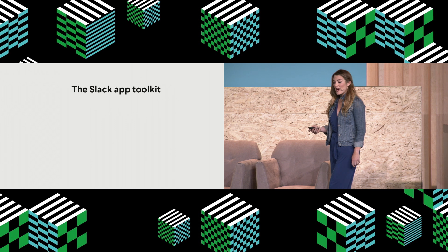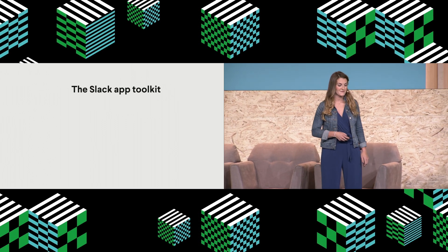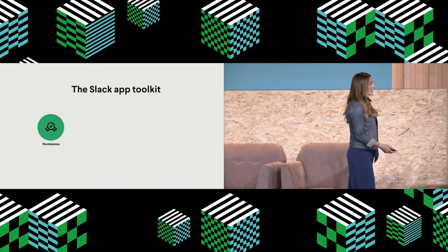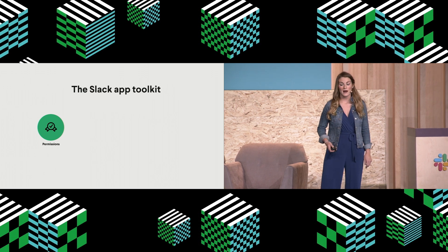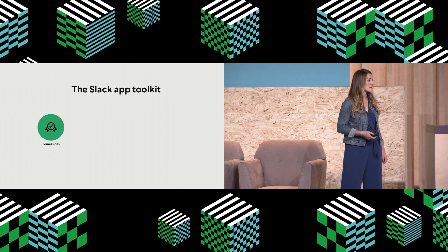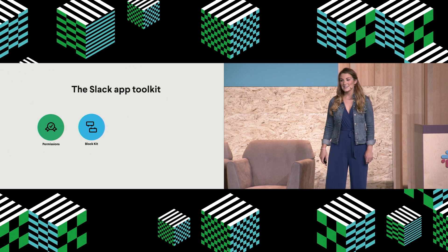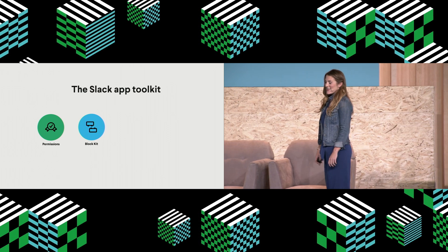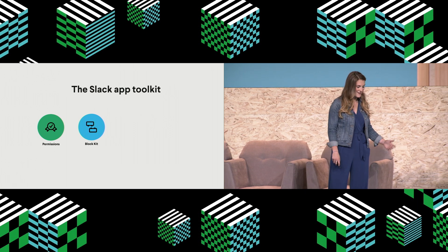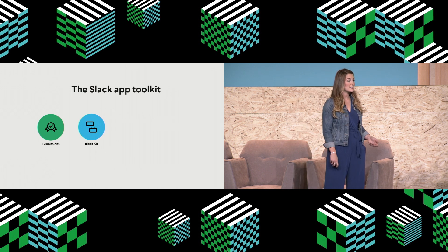Today we talked about the happy path for building apps, and there are four key components that entails. First, permissions. We launched today granular bot permissions, which allows you to request only the scopes that you need to build your app. This allows our largest and most secure enterprises to harness the value of platform. Next, we talked about Block Kit. This is our UI framework that we launched in February, and today we talked about how we have multi-selects and radio buttons coming to Block Kit.